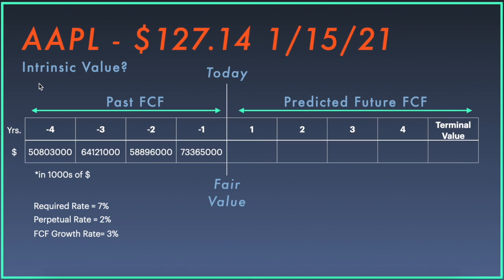The future has not happened yet, so we don't know what the future cash flow is. The best way to approximate that is to look at historic free cash flow. In this table, the line in the middle represents the present or today. Negative one means last year, negative two is two years ago, three and four years ago. Similarly, one is next year, two years from now, and so on. We'll get to the concept of terminal value a little later in the video.